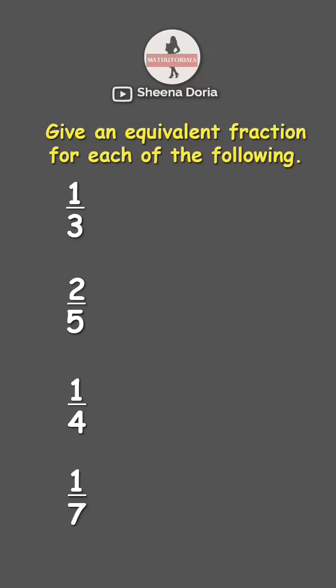For example, I will multiply one-third by three. One times three is three, and three times three is nine. Therefore, one-third and three-ninths are equivalent fractions.